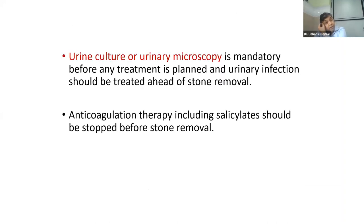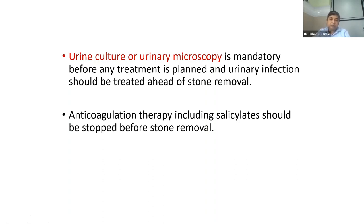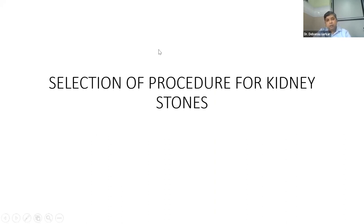Before any intervention, you must have urine microscopy to rule out UTI; if present, treat it before intervention. Regarding anticoagulation therapy: if the patient is on anticoagulation, it is better to stop it after consulting with the cardiologist. But sometimes it cannot be stopped — in those cases, any form of laser surgery is better, using holmium laser or thulium laser, because this causes minimal postoperative hematuria. If absolutely necessary, you can do surgery with anticoagulation on, but try to use laser energy.